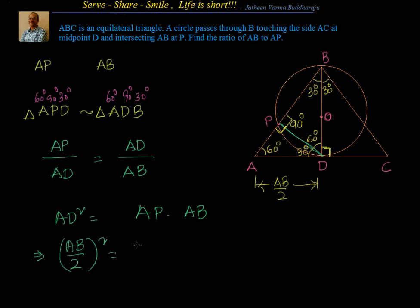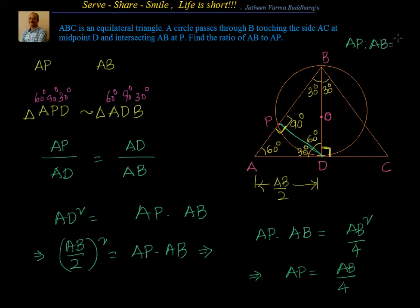AB by 2 whole square is equal to AP into AB, which is nothing but equal to AP into AB equal to AB square by 4. AB square by 4, which gives me AP equal to AB by 4.